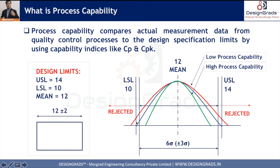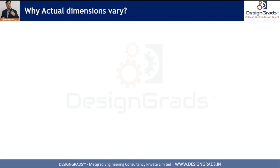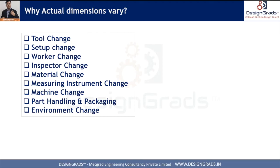In the real world, actual dimensions vary because there is a lot of variation in processes. Sources of variation include tool changes, setup changes, worker changes, inspector changes, material changes, measuring instruments, machines, part handling and packaging, and environment changes. These variations get induced into dimensional variation, which is why process capability must capture all of them.